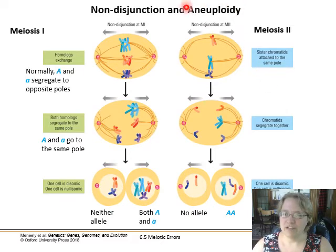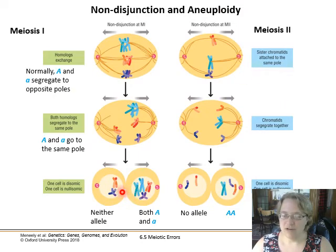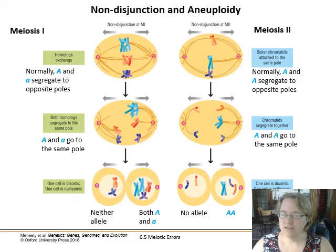Aneuploidy is what we're talking about when we do not have the proper ploidy. 'Aneu' means wrong, so aneuploidy means wrong ploidy — you either have less than you want or more than you want. Normally the chromosomes segregate to opposite poles.